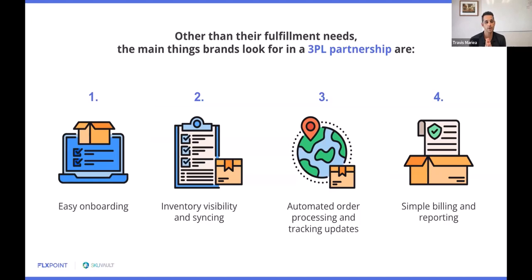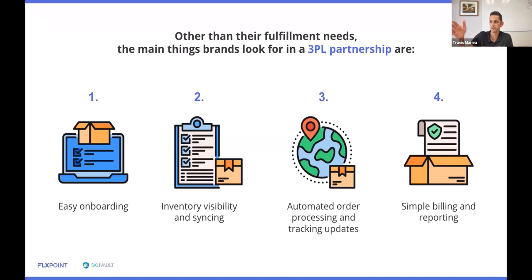When it comes to what you need to automate, on both sides of the 3PL and brand relationship, you're expecting easy onboarding — getting your physical items within the 3PL in a fairly seamless way, integrating your store, doing all of this in the first 30, 60, or 90 days. You're not looking to make another project; you're looking to automate and outsource things. Numbers two through four are inventory visibility, automated order processing, and simple billing reporting. Kate, maybe pause and let you speak to what you see from 3PLs and brands on the SkuVault side.